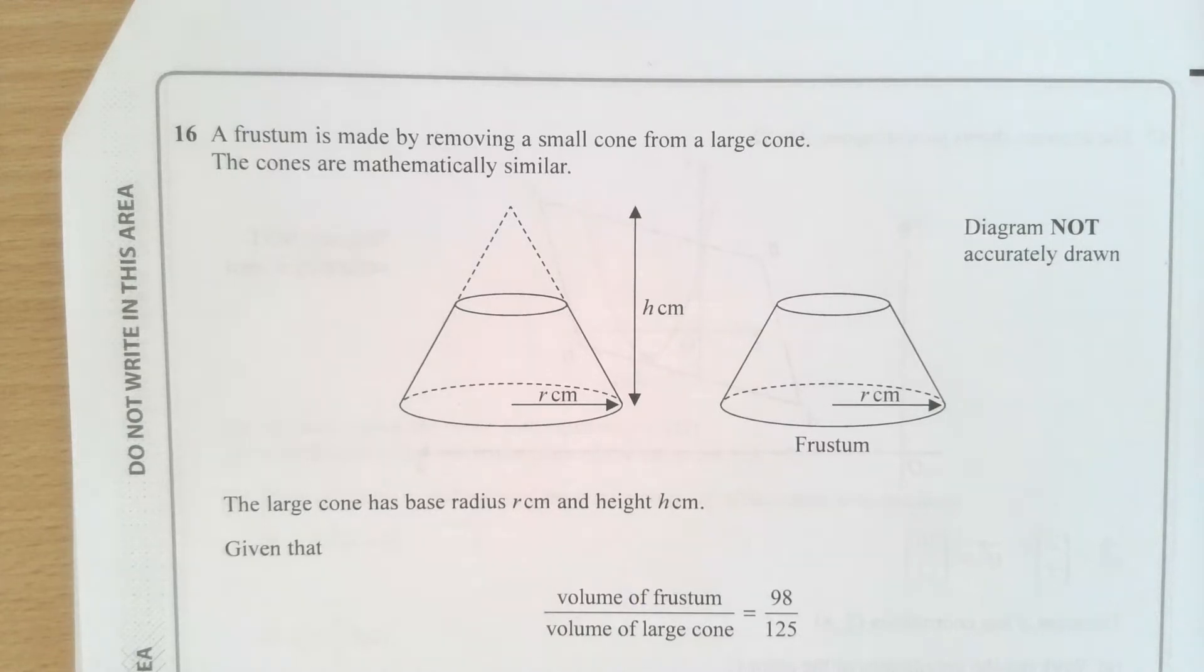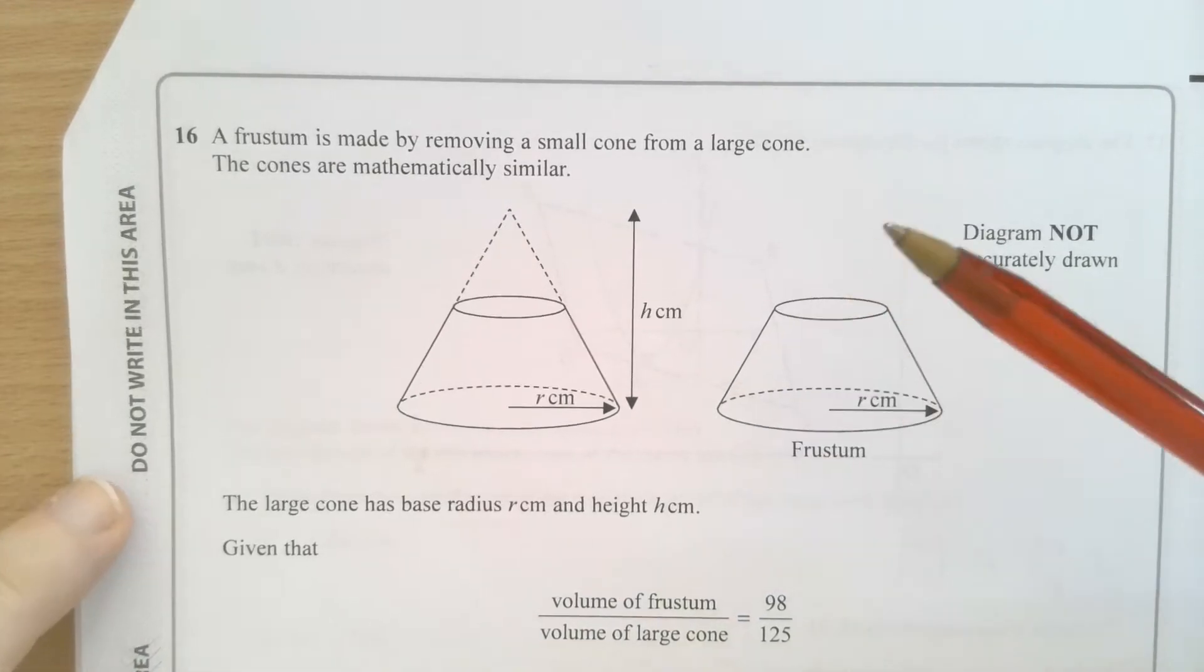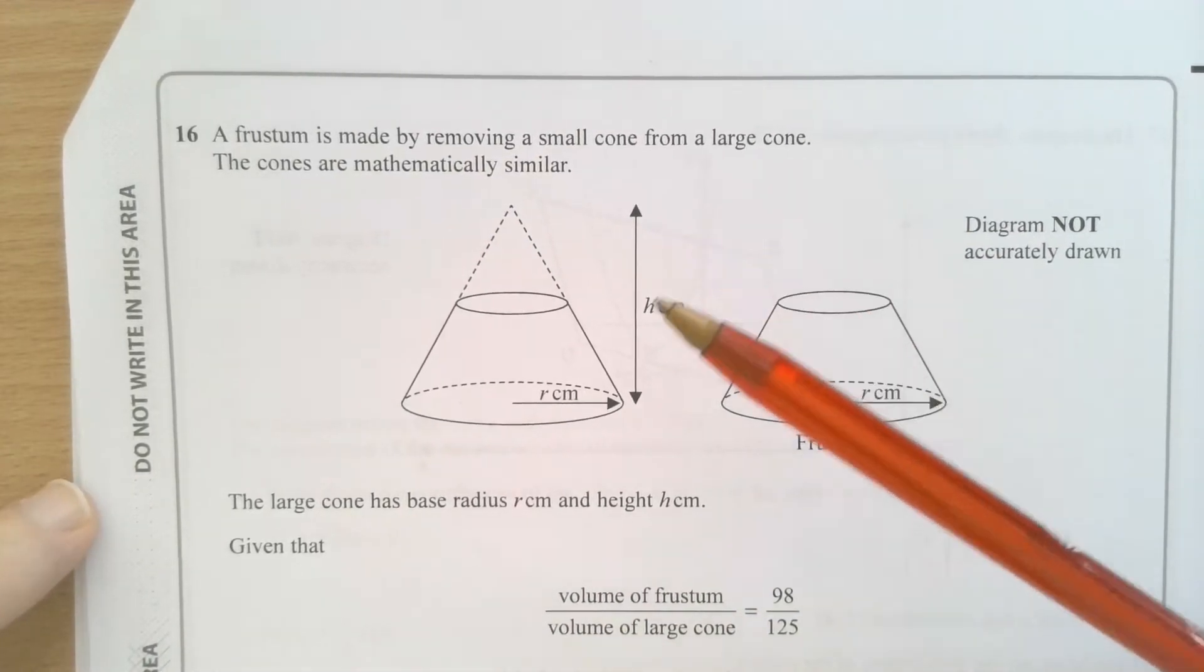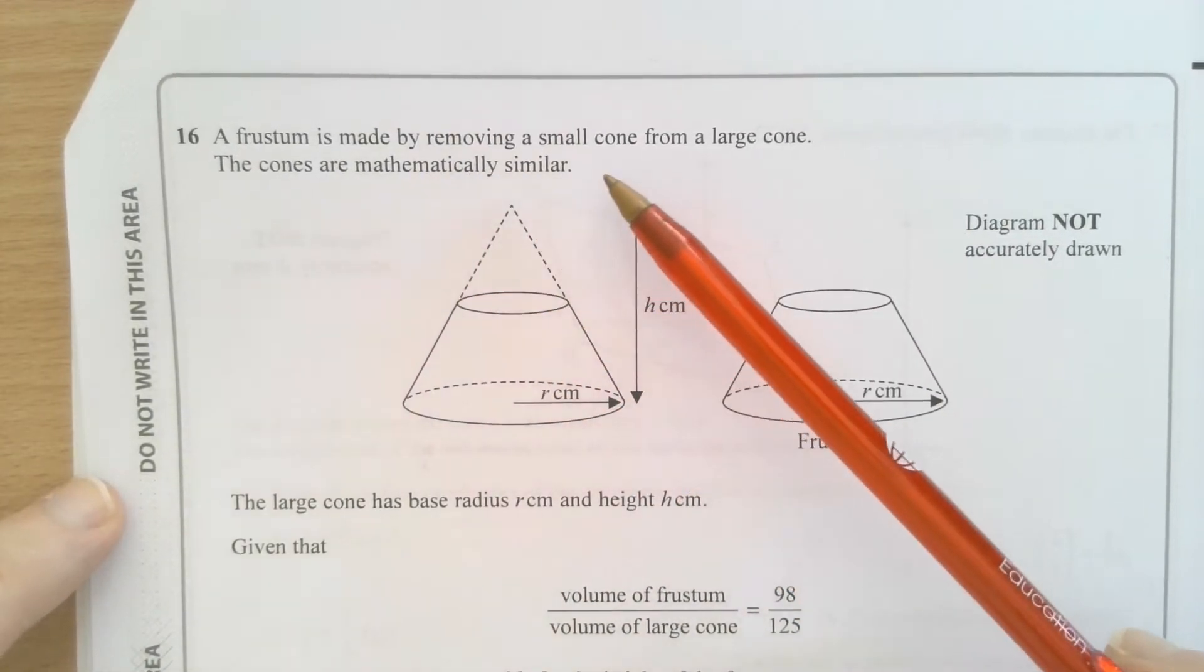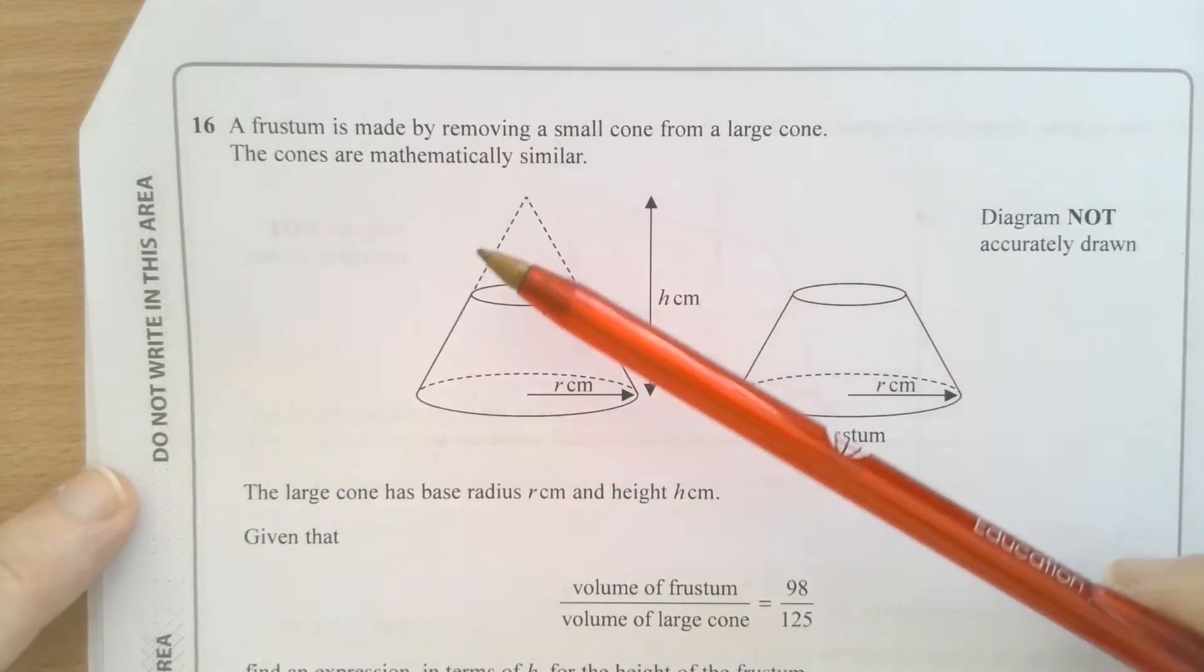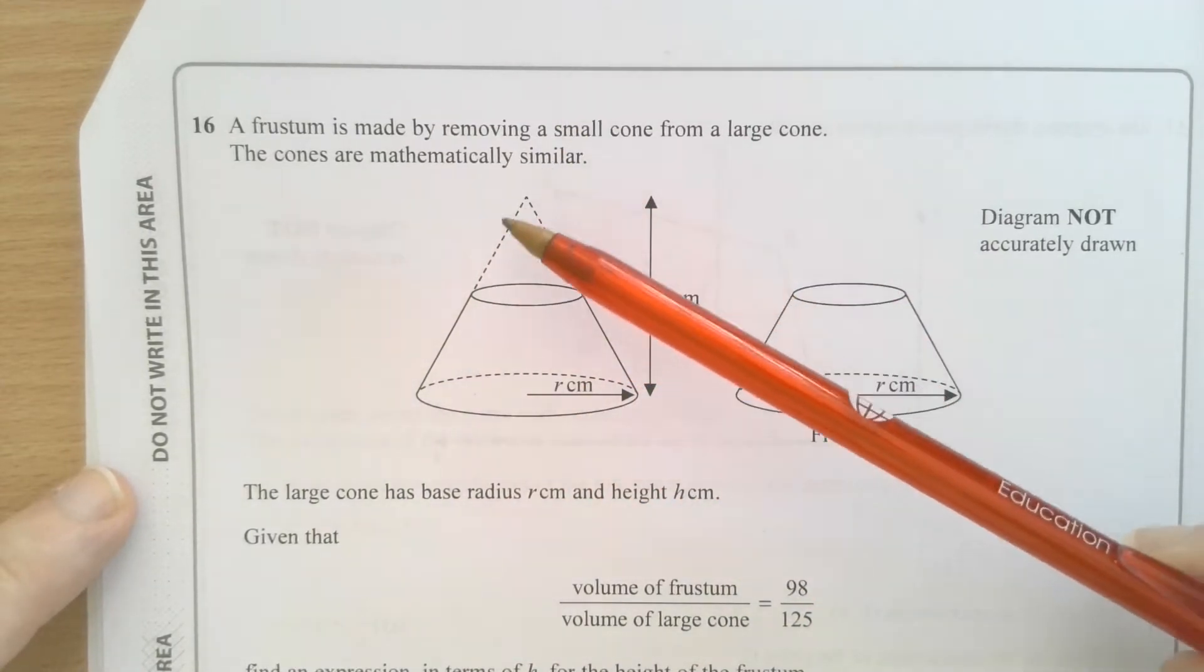Hello and welcome back to Maths with Mr. Duffield. My ongoing IGCSE paper review series is continuing with this. A pretty complex question actually. A frustum made by removing a small cone from a large cone. So this would have been a large cone, but this smaller one has been removed.